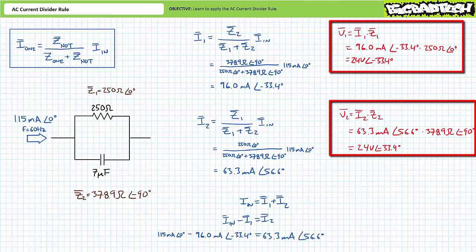Additionally, one can use Ohm's law to verify the results obtained using the AC current divider rule. Because these two elements are in parallel with one another, they should experience the same voltage differential. Ohm's law solving for voltage demonstrates impedance Z1 experiences a differential of 24 volts at an angle of negative 33.4 degrees.